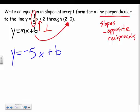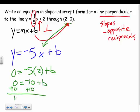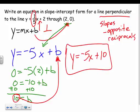But I can find b, because the problem gave me a point for a reason: my new line goes through 2, 0. So I plug in 2 for x and 0 for y: 0 equals negative 5 times 2 plus b, which gives 0 equals negative 10 plus b. Adding 10 to both sides gives b equals 10. Now I can plug that in: y equals negative 5x plus 10. That's my equation — a line perpendicular to y equals 1 fifth x plus 2, passing through the point 2, 0.